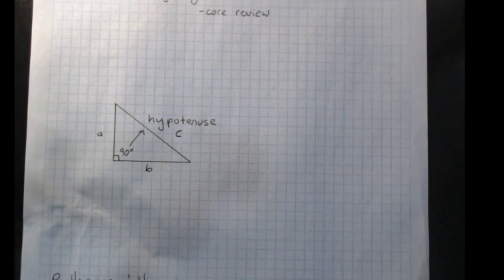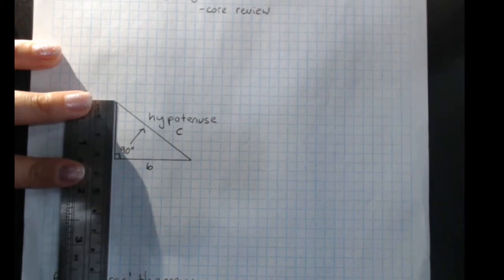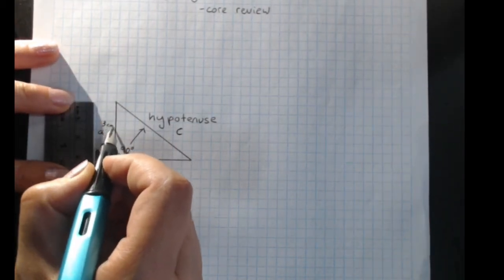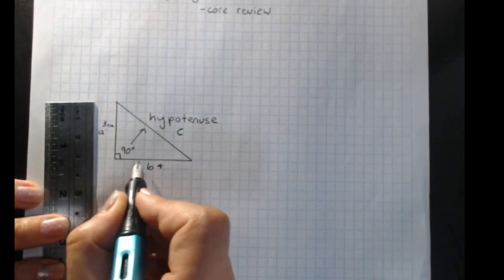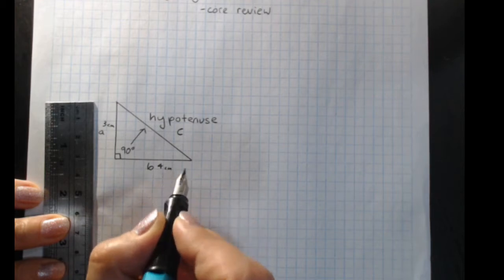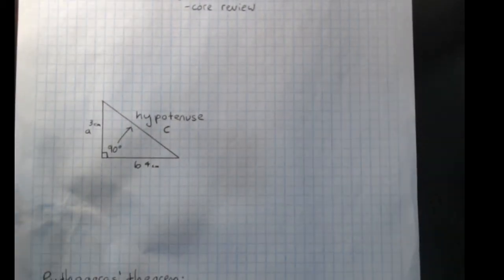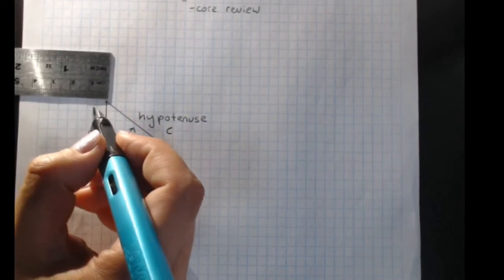Because all that the formula says is if you measure the sides of a right-angled triangle, or if you're told them, so that's three centimetres, and this one's four centimetres because you can tell from the grid lines, if you make a square on each of those sides, so this one would have to come out three centimetres.